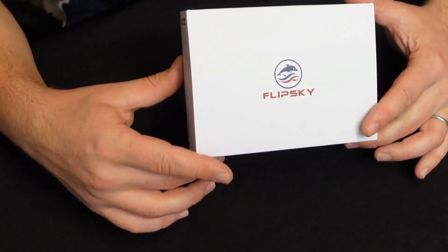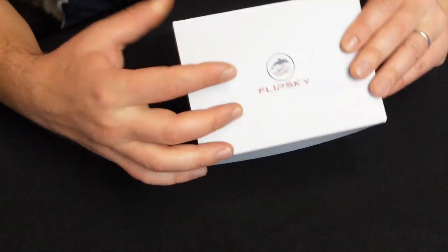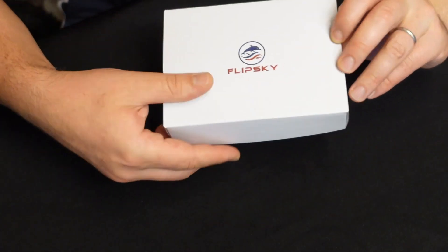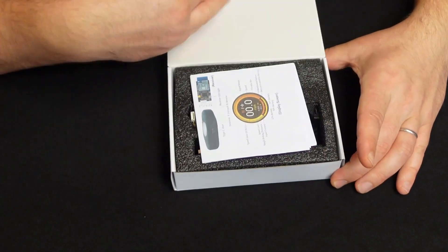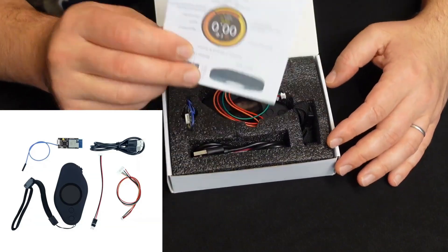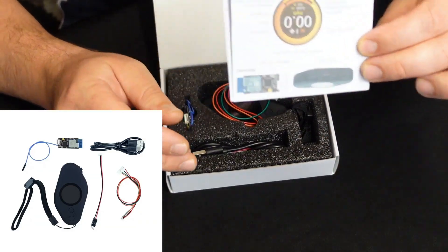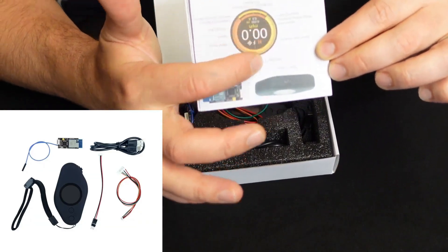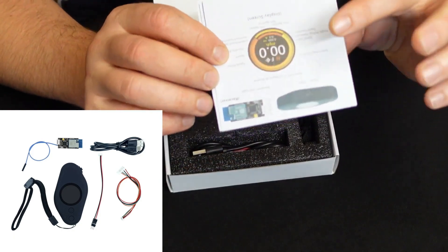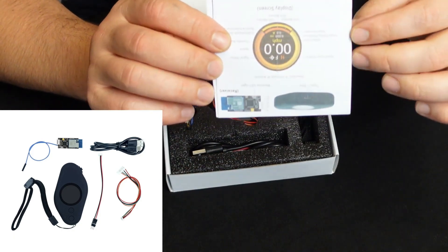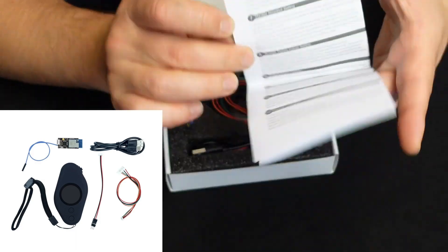So inside the box, which is quite nice to be fair, it's a cardboard box with a FlipSky logo on it, you do get, for starters, the manual. It tells you exactly what to expect for the remote, what the options are, what to see on the screen. It's quite nice to have.